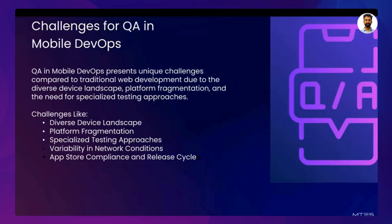Challenges for QA in a mobile DevOps context include: diverse device landscape, platform fragmentation, specialized testing approaches, variability in network conditions, and app store compliance. Mobile devices are used in environments with varying network conditions. Testing how an application performs across different networks like 3G, 4G, 5G, and Wi-Fi, and how it handles network transitions like switching from LTE to Wi-Fi or experiencing a dropped connection, is critical for QA but hard to simulate accurately. Performance benchmarking — ensuring the application performs well under various conditions like running in the background, during high CPU usage, or when the battery is low — is also a significant QA challenge.